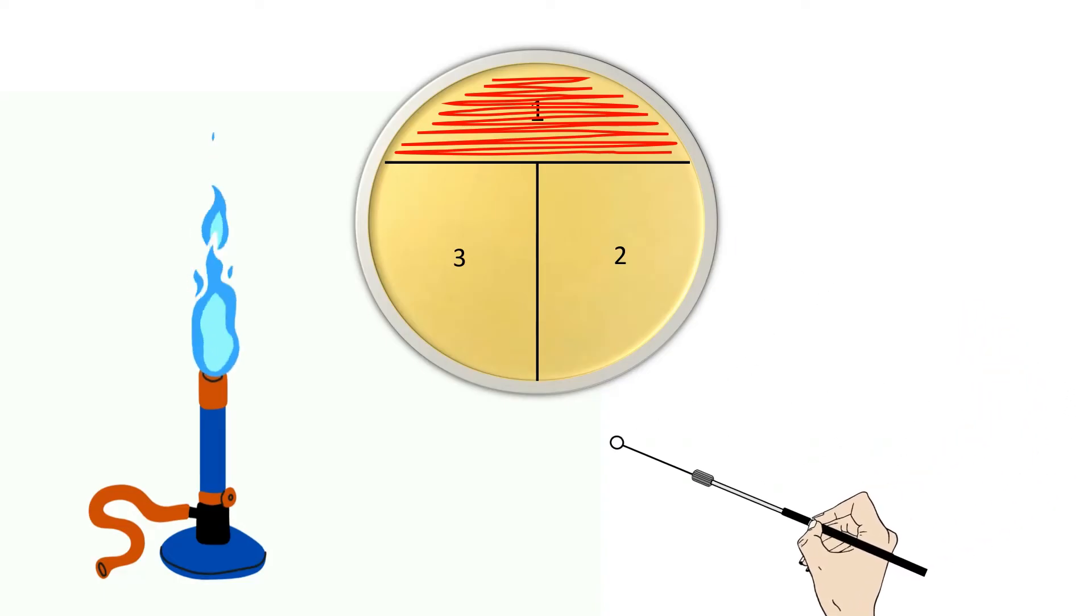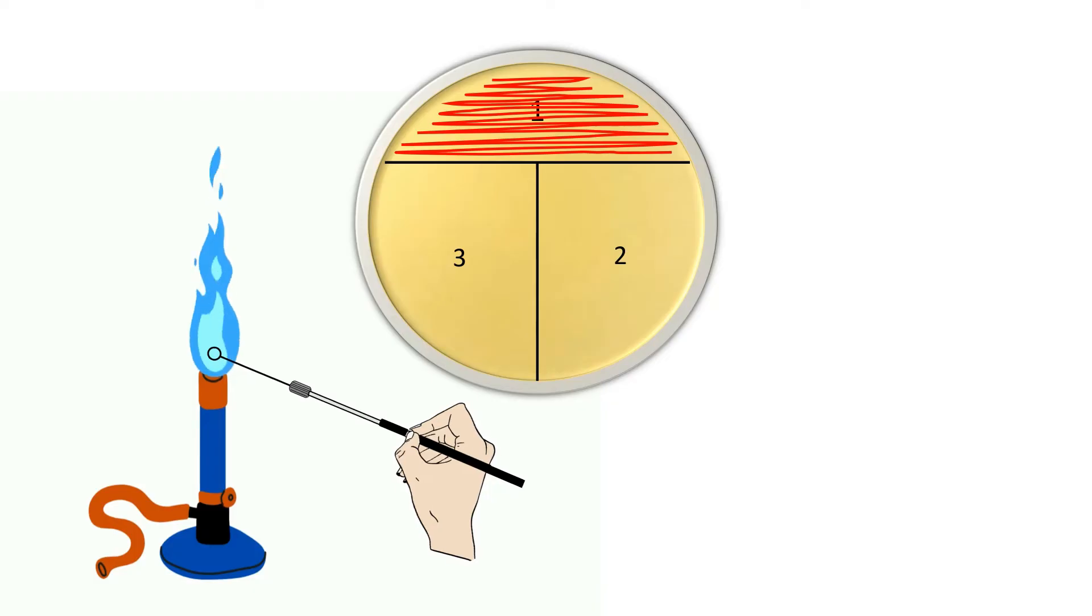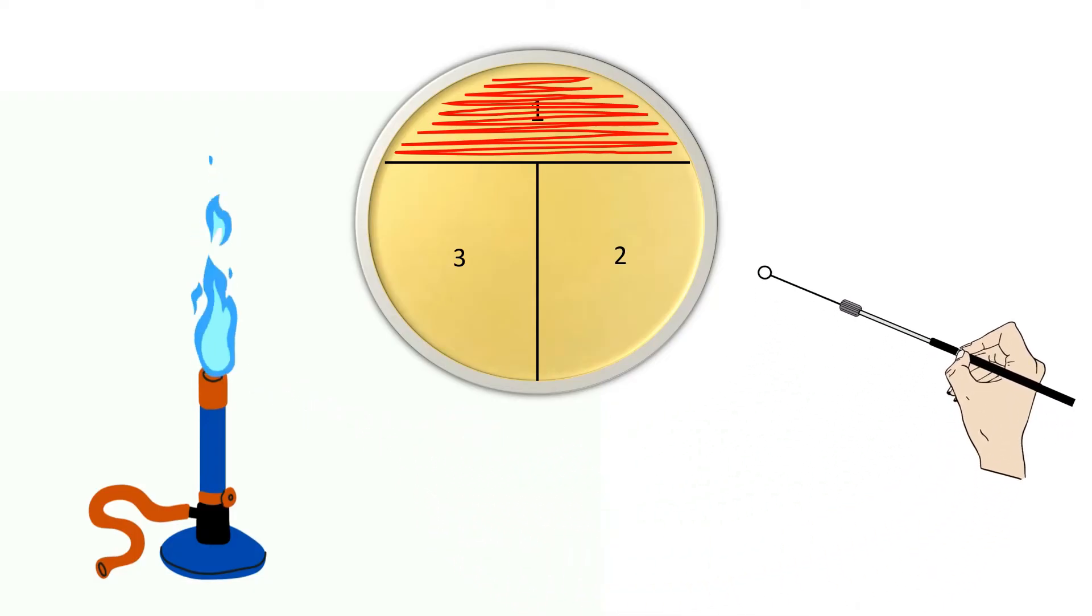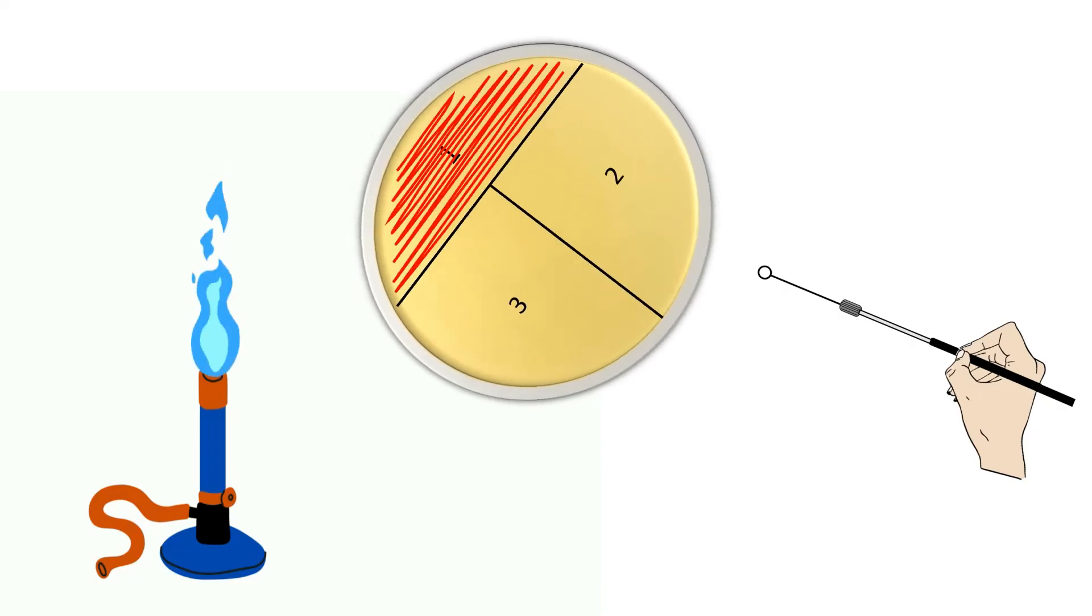Now flame the wire loop again and allow it to cool. Rotate the plate 90 degrees anti-clockwise.